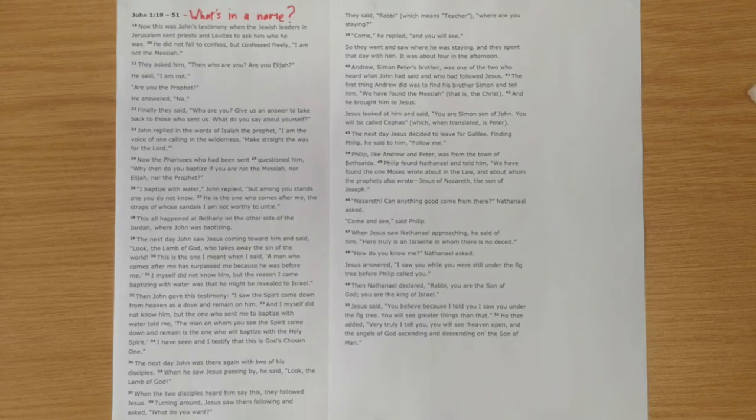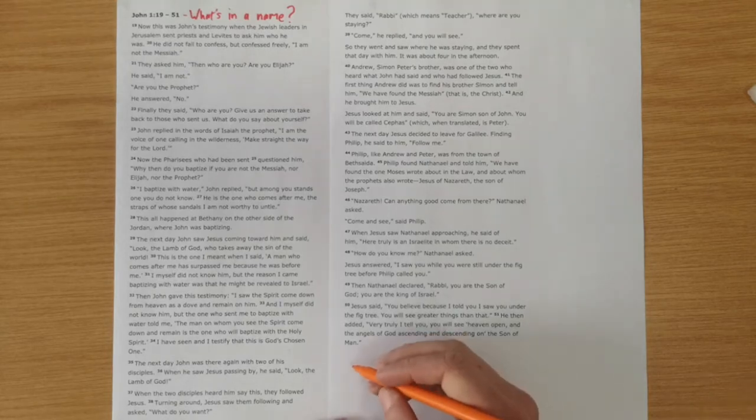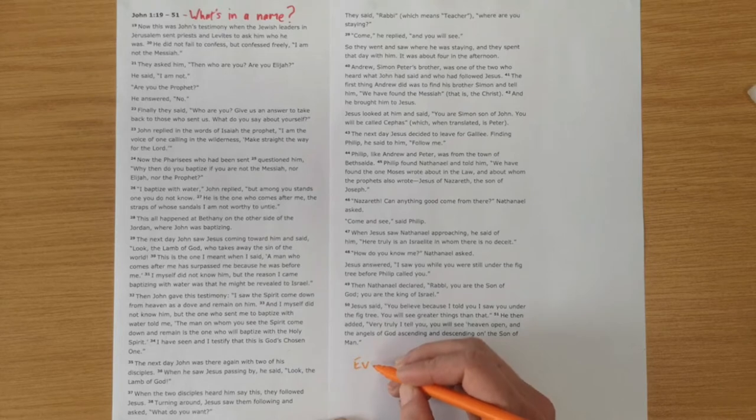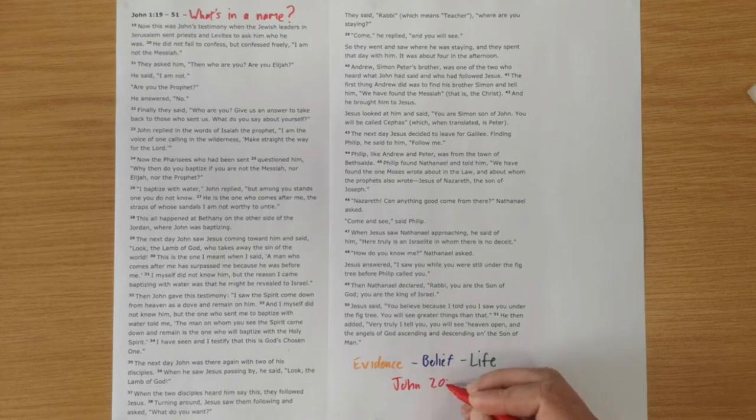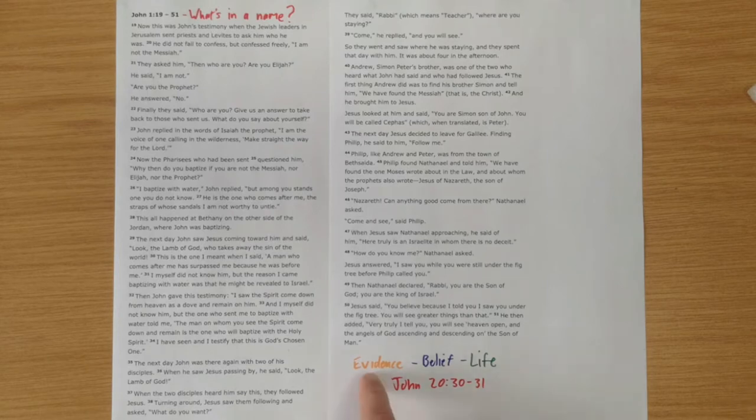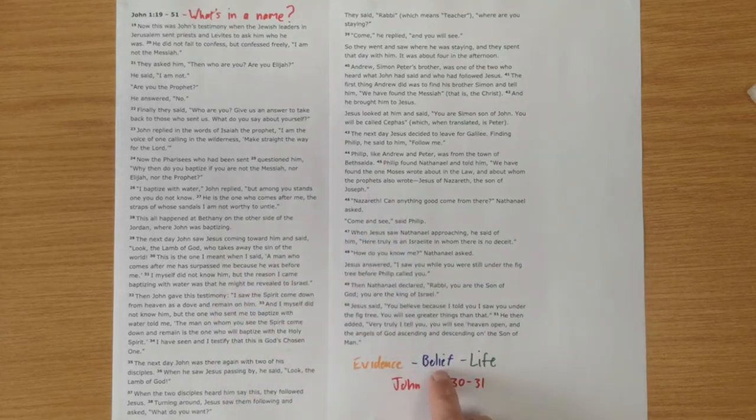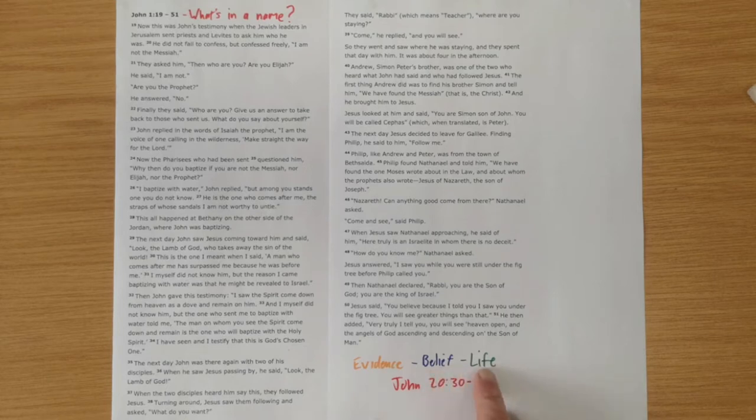I'm going to highlight some of what I've seen. As I showed in the first two videos, what we see in John is evidence, belief, and life. This is from John chapter 20 verse 30 to 31, where John tells us that Jesus did many other signs—evidence which we see throughout this book—but these ones are written so that you might believe that Jesus is the Messiah, the Son of God, and that by believing you may have life in His name.